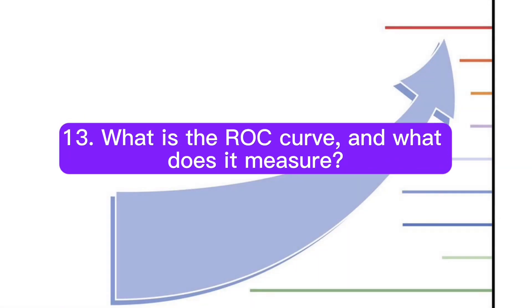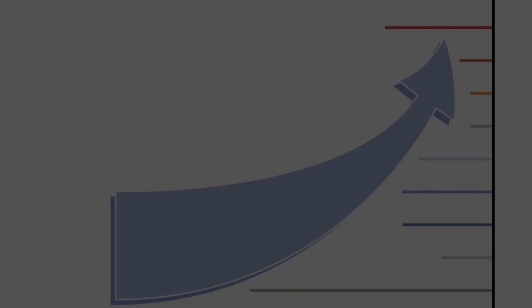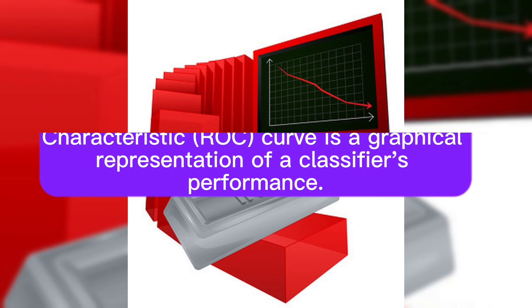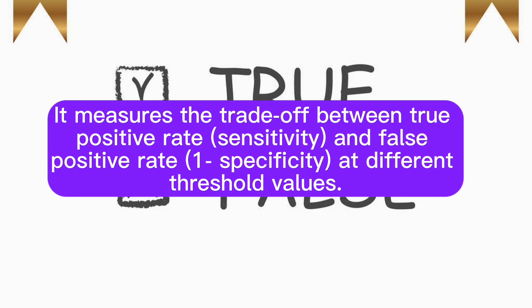Question 13: What is the ROC curve and what does it measure? Answer: The receiver operating characteristic (ROC) curve is a graphical representation of a classifier's performance. It measures the trade-off between true positive rate (sensitivity) and false positive rate (1-specificity) at different threshold values.